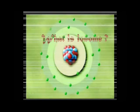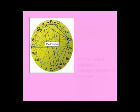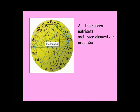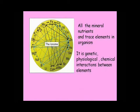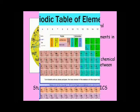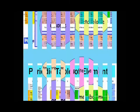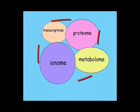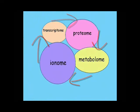What is Ionome? Ionome is the mineral nutrients and trace elements in an organism. It involves genetic, physiological, and chemical interactions between elements. The study of Ionome is called Ionomics. There is a very blurred difference between the transcriptome, proteome, metabolome, and the Ionome.